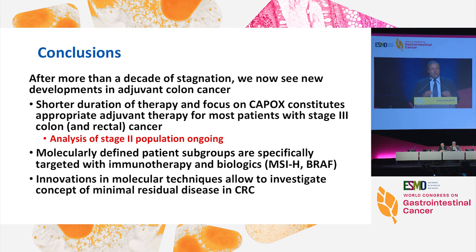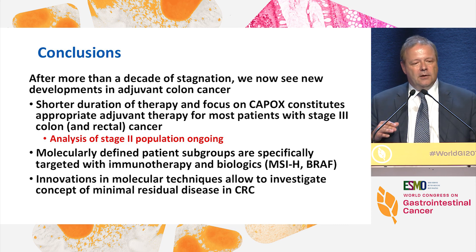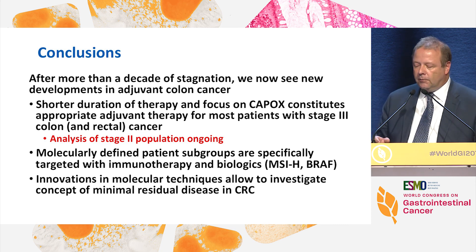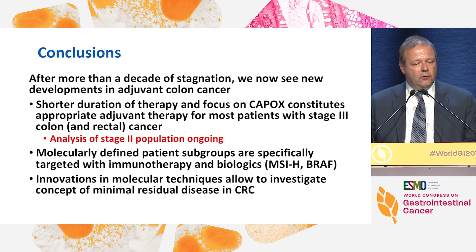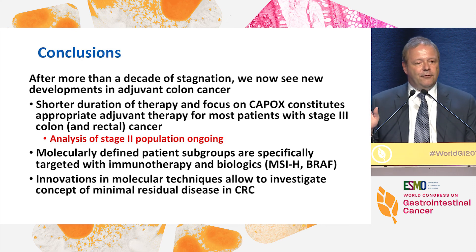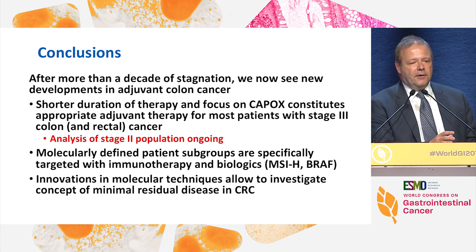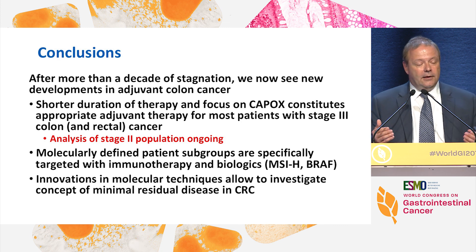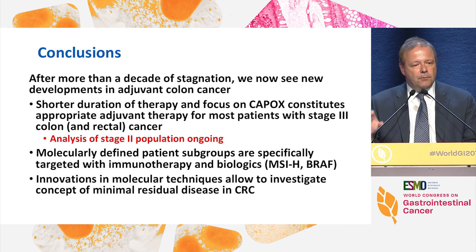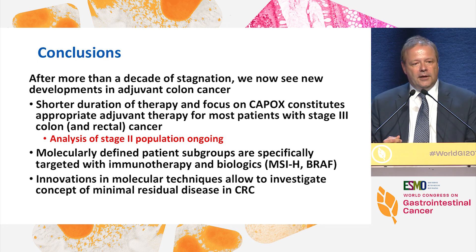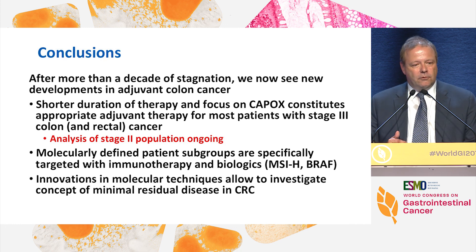In conclusion, there's been a lot of dormancy over the last decade in terms of new advances in adjuvant therapy. We've seen data on shorter treatment duration with CAPOX, and the IDEA group has studies including stage two patients whose subgroup analysis is ongoing. We already have molecularly defined subgroups within stage two and three — MSI-high and BRAF-mutant tumors may warrant specific interventions. The real innovations are in molecular technology identifying minimal residual disease, and the ongoing studies with ctDNA represent the next frontier of truly individualizing adjuvant therapy for stage two colon cancer.